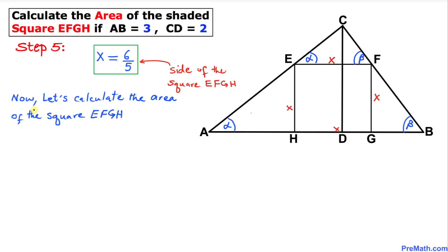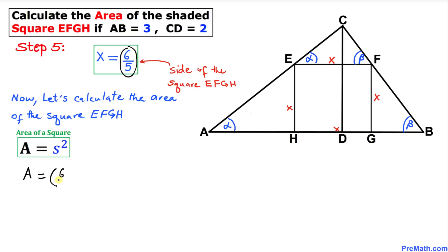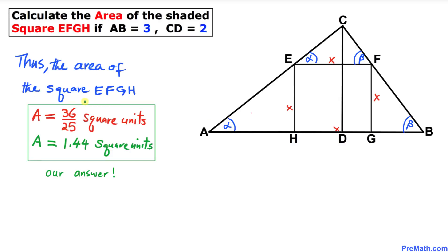Now let's calculate the area of square EFGH. Using the formula A equals S squared, where S is the side of the square, we substitute our side of 6 over 5. The area equals (6/5) squared, which is 36 over 25. Thus the area of square EFGH is 36 over 25 square units, or in decimal form, 1.44 square units. That's our final answer.